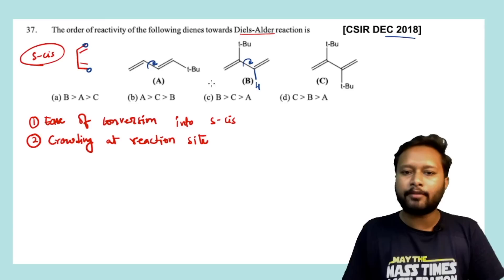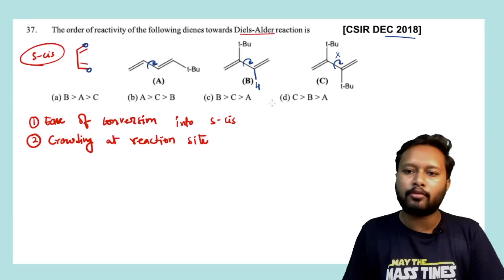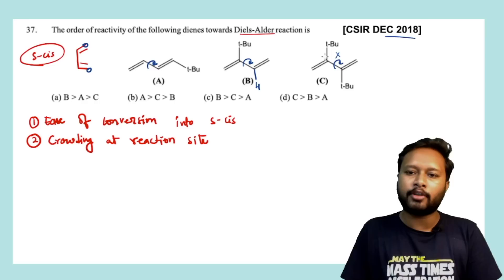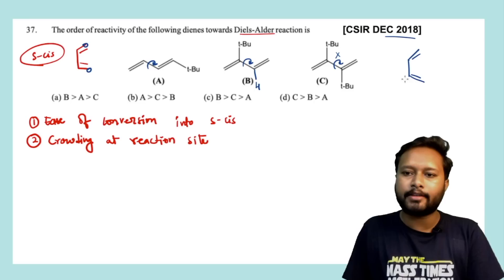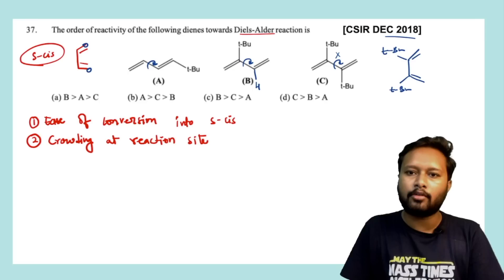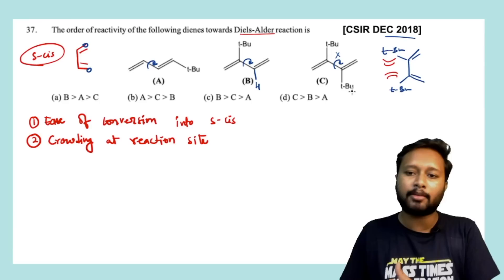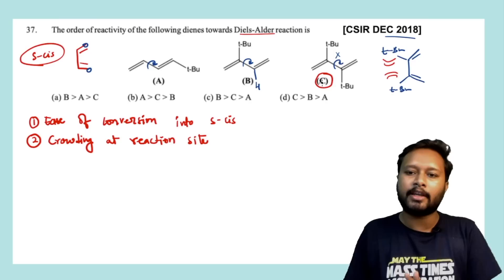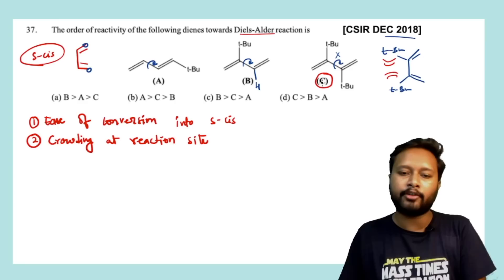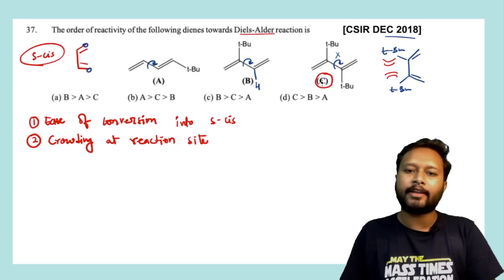In option C, ease of rotation is not there because of two tertiary butyl groups. After rotation you get S-cis but both tertiary butyl groups end up on the same side, causing repulsion among each other. This destabilizes the rotation and option C stays as S-trans — it will not get converted to S-cis. So option C has the least reactivity.